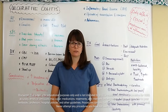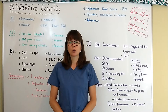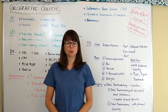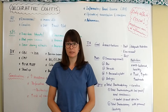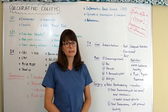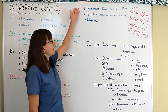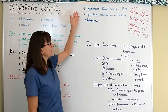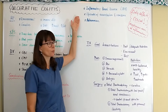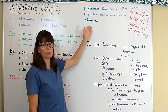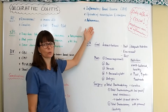Ulcerative colitis is one of the inflammatory bowel disorders closely related to Crohn's disease, but there are some similarities and also some differences. It is an inflammatory bowel disease (IBD), and there are typically some episodes of exacerbation as well as remission, and it is an autoimmune disease. Those are the similarities with Crohn's disease.